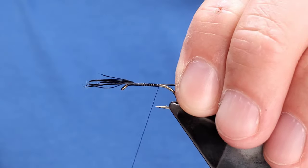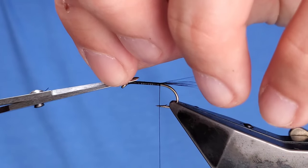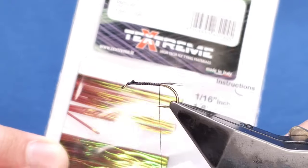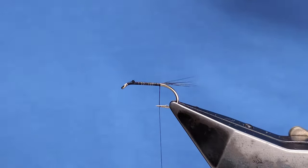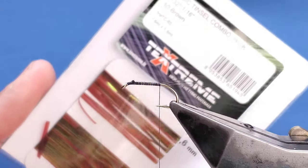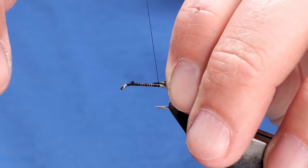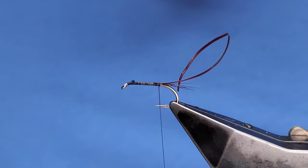Park your thread between the point and the barb, trim away any waste. Now for the flashback, this is Magic Tinsel in brown, available from Ian Christie at Flybox. This is the 1/32nd of an inch, the smaller of the two sections you get. I'll catch this on my side and use the thread to roll it round onto the top. One turn's enough.